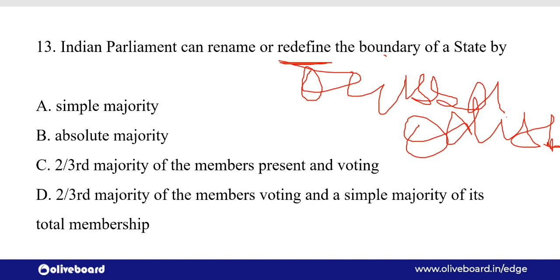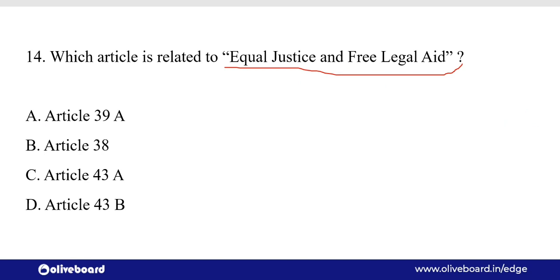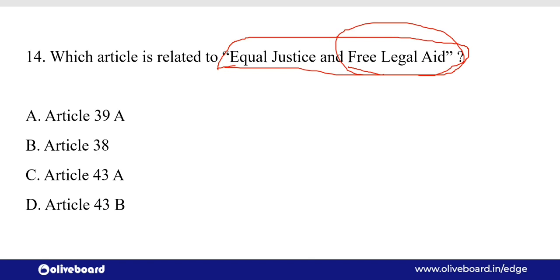Which article is related to Equal Justice and Free Legal Aid? यानि कि हर नागरिक को Equal Justice मिलना चाहिए — चाहे वो अमीर हो या गरीब हो, किसी भी caste, creed, religion या gender का हो। Every citizen of India has to have equal justice and free legal aid — यानि कि जो लोग अपने लिए खुद से legal aid नहीं ले सकते, उनको free legal aid provide कराई जानी चाहिए। ये लिखा है Article 39A में — ये भी DPSP है।